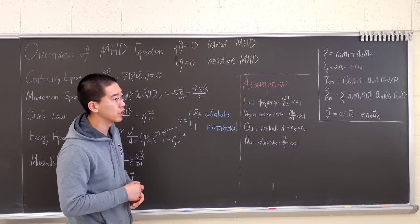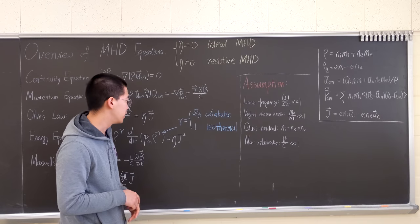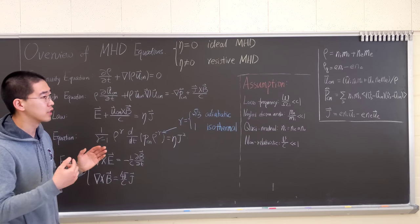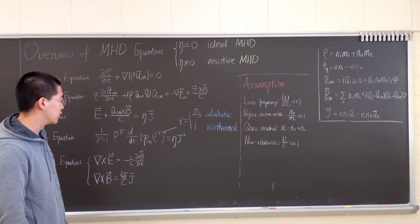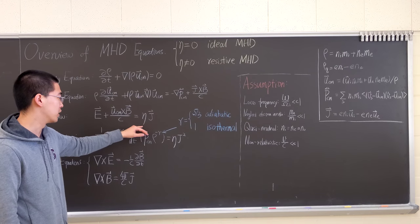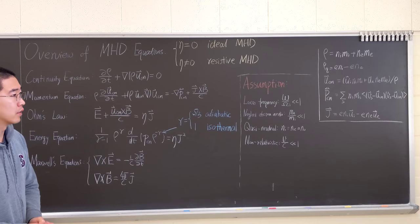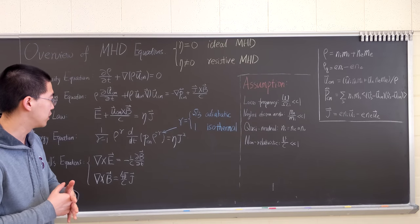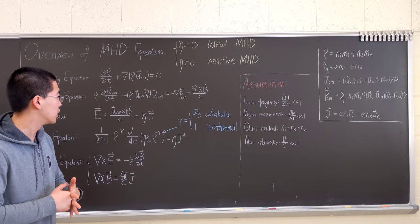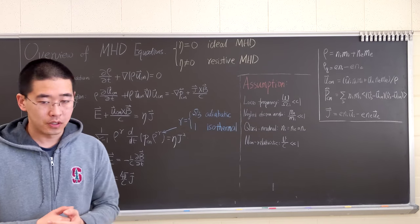When it's not zero, we're dealing with resistive MHD, which will make the calculation a little bit more involved since this term and this term will be non-zero. That would make the simplification a little bit more involved.